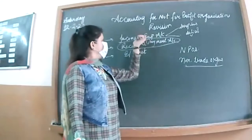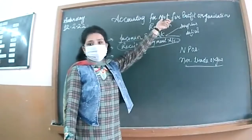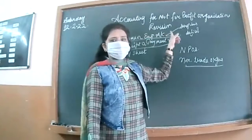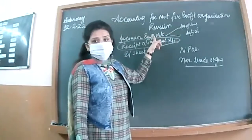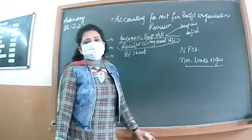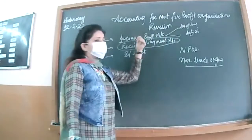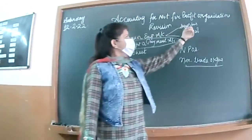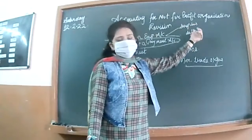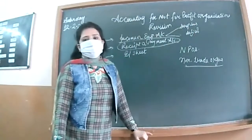We are not calling it a Profit and Loss Account because these are not-for-profit organizations. When they prepare the Income and Expenditure Account, the debit side will be the expenditure side and the credit side will be the income side. The balancing figure will be either surplus or deficit.